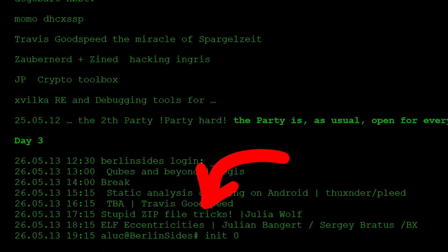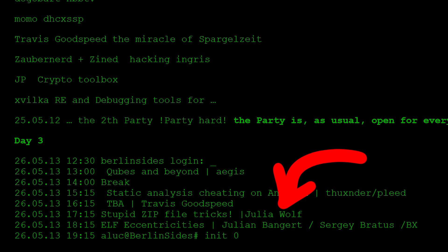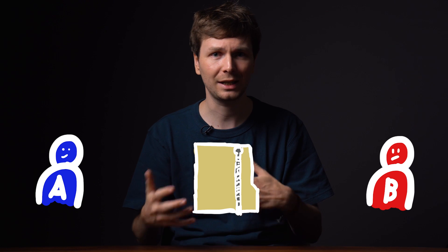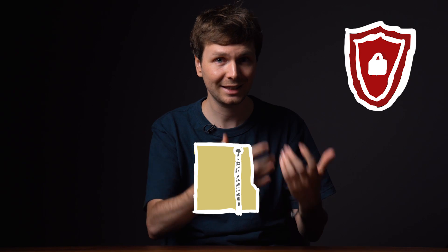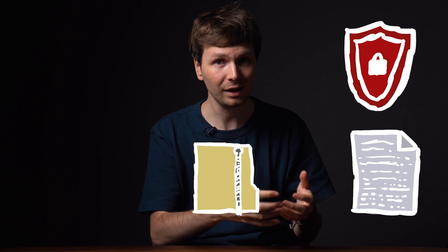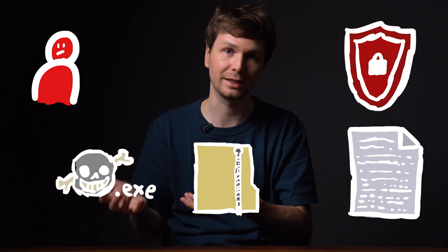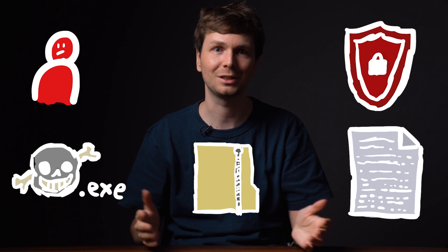The first time I heard about file format tricks was in 2013 at a small Berlin conference called BerlinSites. Julia Wolff is a malware researcher and did a talk about stupid zip file tricks. I can't find slides for this talk, and there were no recordings of this conference. But it was about crafting zip files such that different programs that can read zip files would understand the file differently. Because parsing this data is not straightforward, different implementations might understand it slightly differently. And this could be abused — for example, to have antivirus scanning the files in a zip file reading different files than when the user opens the zip file with the Explorer. Antivirus sees a harmless text file, and the user sees malware. And this was mind-blowing for me when I heard this the first time.